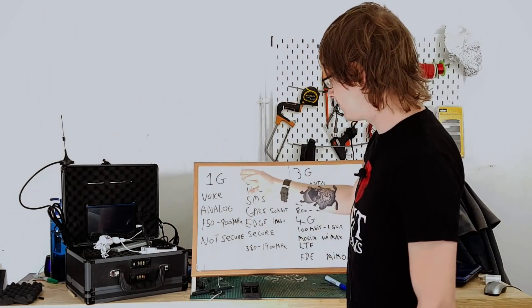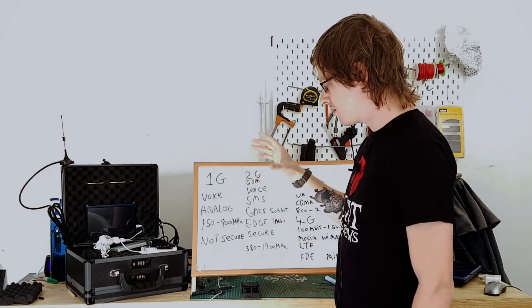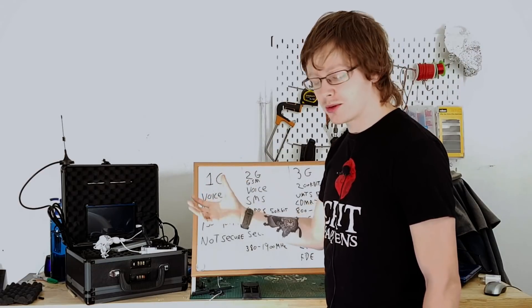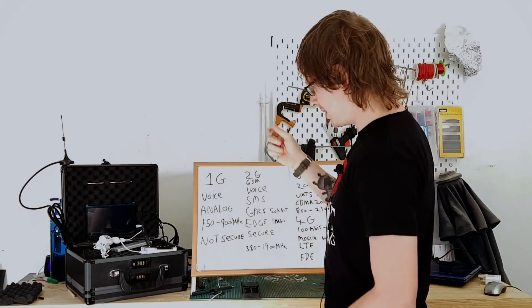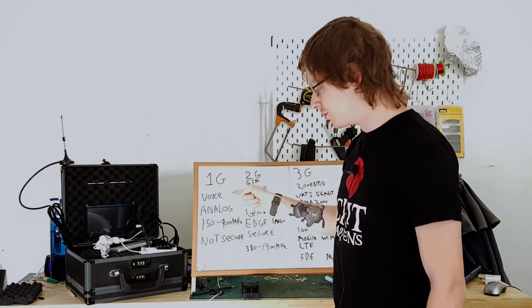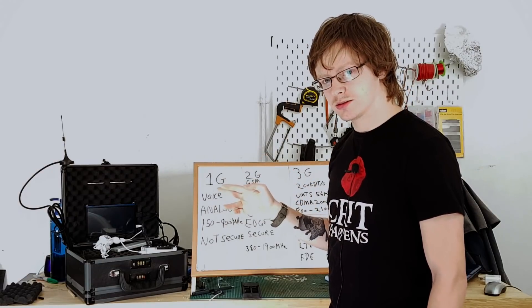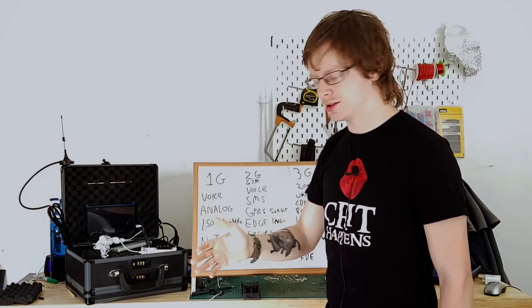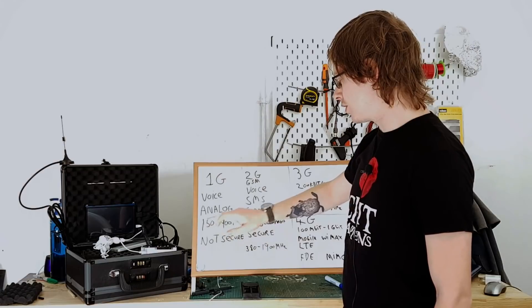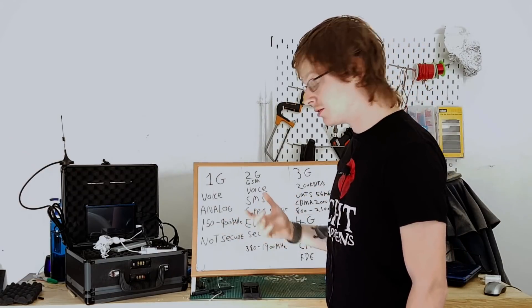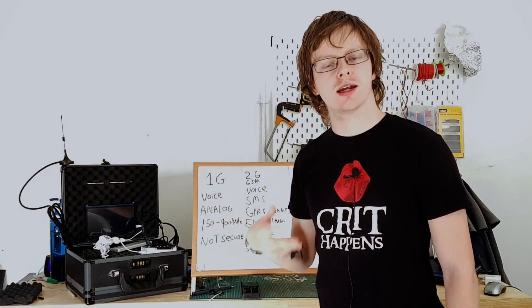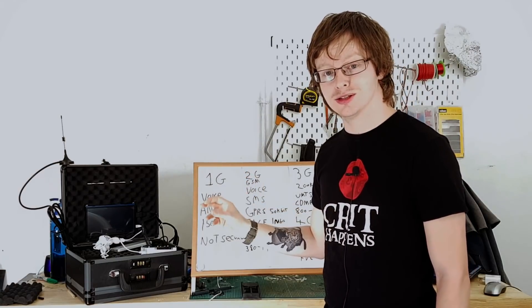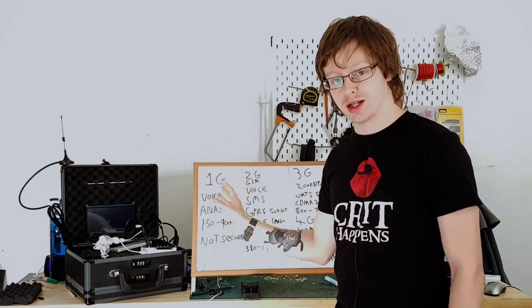So 1G or first generation was the first mobile phone communication technology that was made. If you remember the big brick phones, the big antennas, they were first generation. They were capable of voice communication, they were analog, they were not digital. So it's a wave, it's not ones and zeros. The frequency range for it was 150 to 900 megahertz. That was the space on the spectrum that they were allocated and allowed to use. And it's not secure, it was not encrypted. Anyone could capture that traffic and listen to it. It was basically a glorified two-way radio at the time.